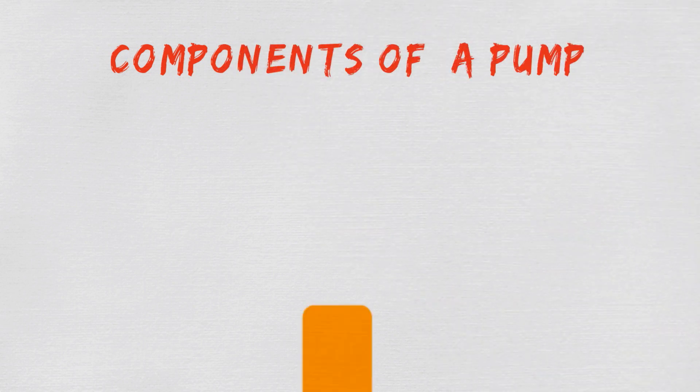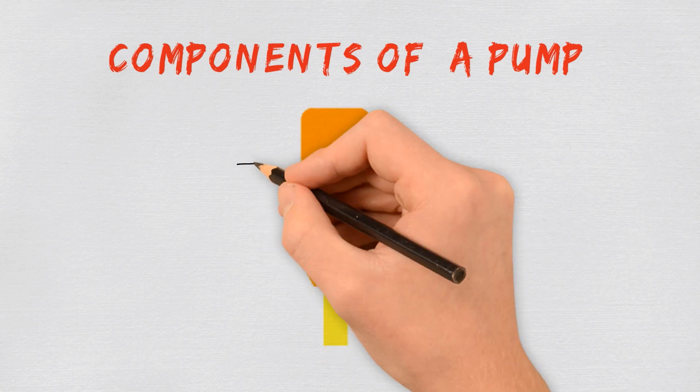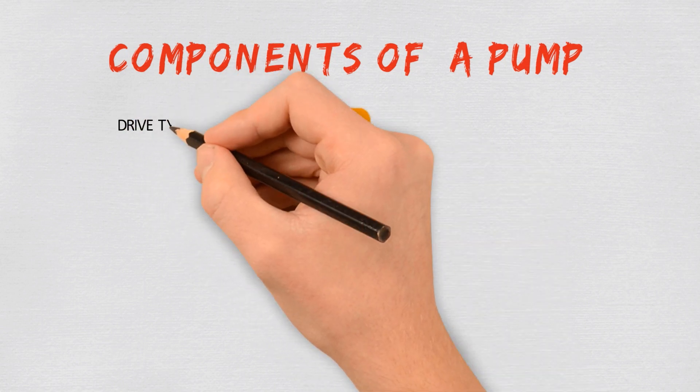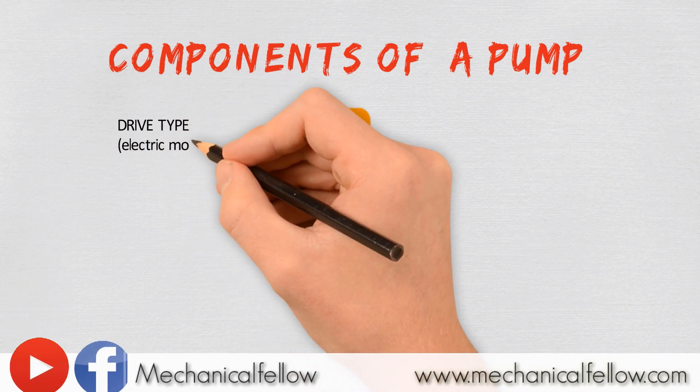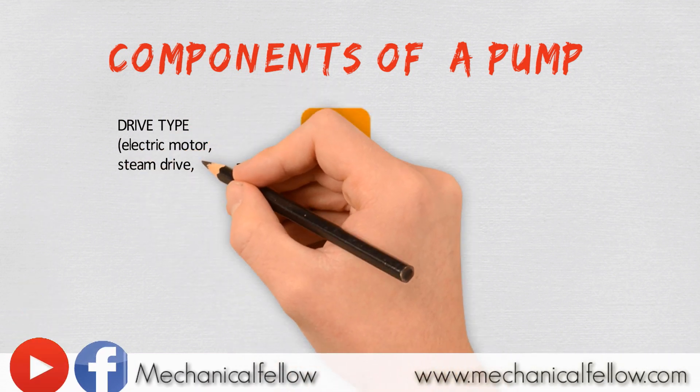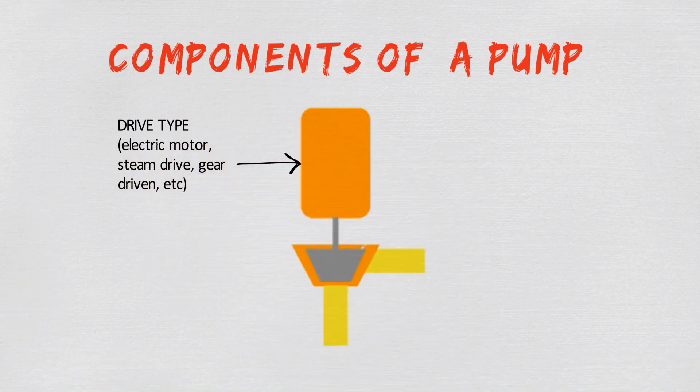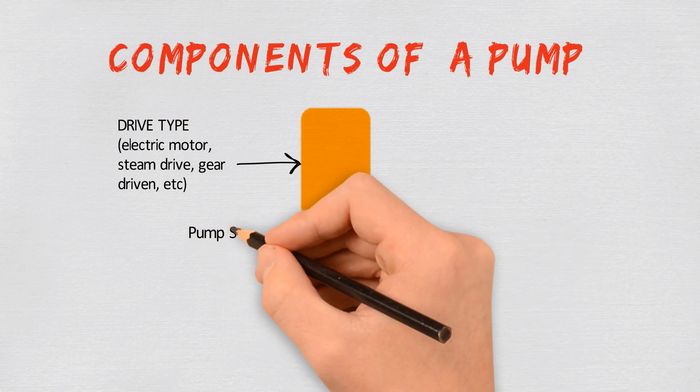There are some basic components of a pump. The orange one is a prime mover - it can be a steam turbine, gas turbine, or a motor. This is the pump shaft.